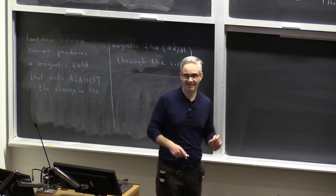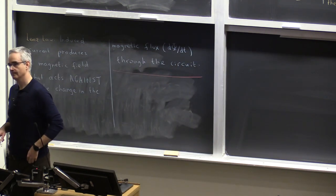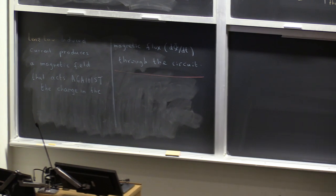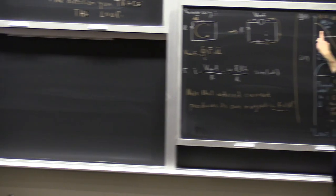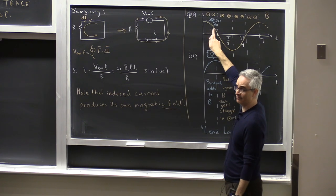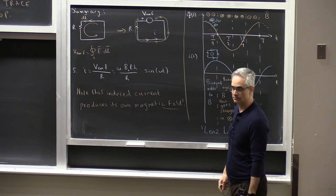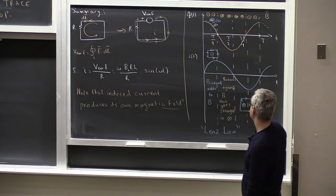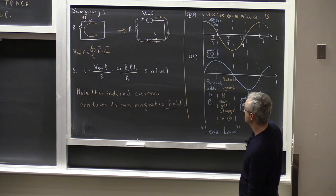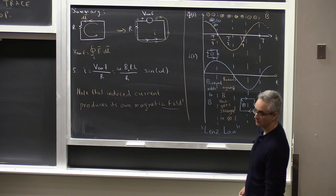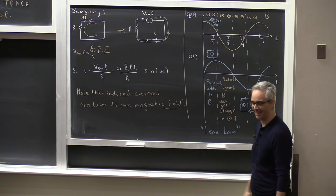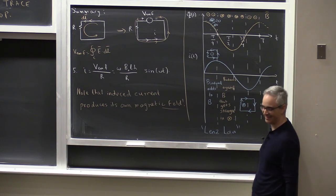Student confirms: when d-phi/dt is negative — phi decreases through the loop — the induced field compensates, providing additional magnetic field to resist that change. That's a good word: compensates. Now here is an example with numbers.